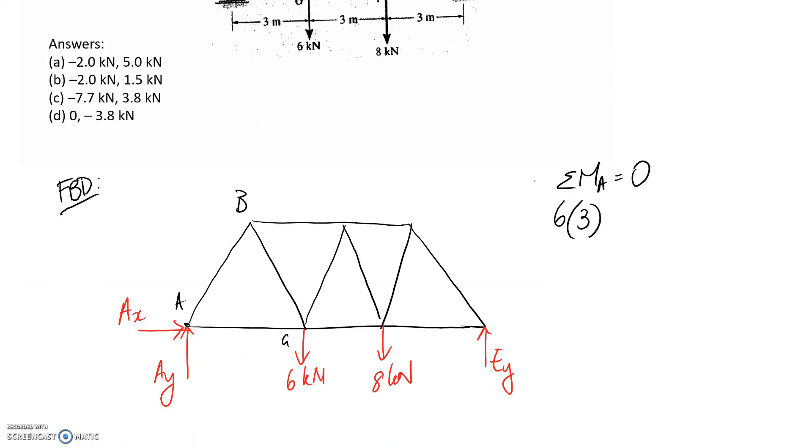In terms of the direction, we're considering anti-clockwise is positive. So that means that this is going to try and push us in the clockwise direction, so it should go in as negative. The next one is the eight kilonewtons. It's at an extra three meters across, which makes it six. And this is going to be in the clockwise direction as well, so it's negative. And then we have Ey, which is at another three meters across, so that makes it a total of nine. And this one is going to go in the anti-clockwise direction about A, so it should be positive.